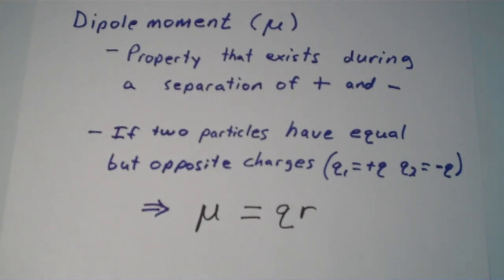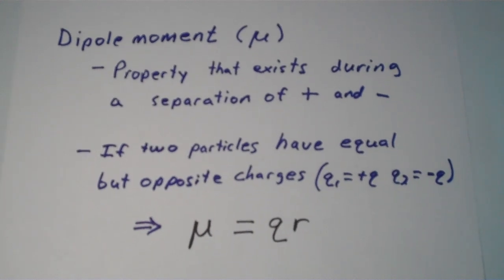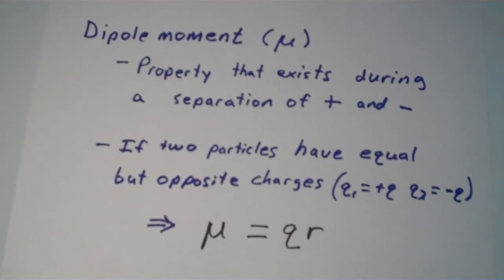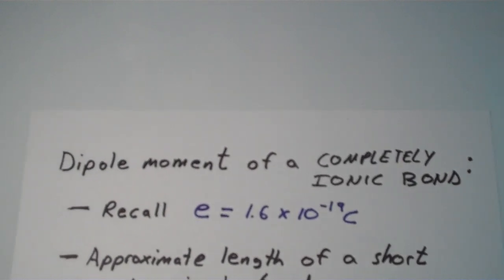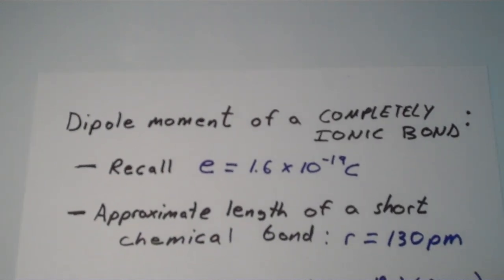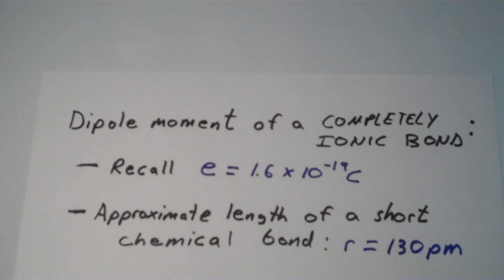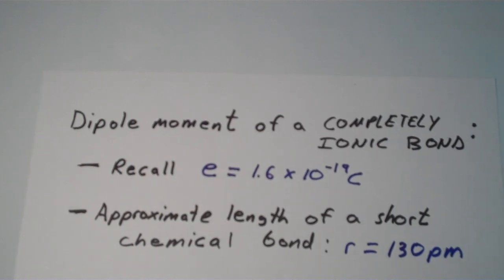With this equation in mind, we can switch gears a little bit and apply this equation to a certain scenario. The first scenario is we're going to apply dipole moment to a bond that is completely ionic. What do I mean by completely ionic? I'm talking about a complete transfer of the electron from one atom to another, 100%.